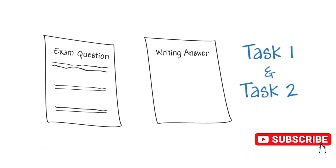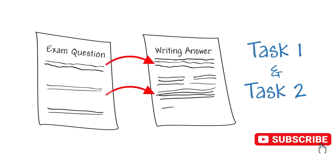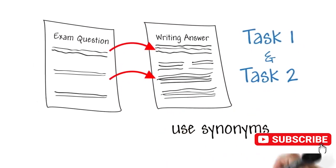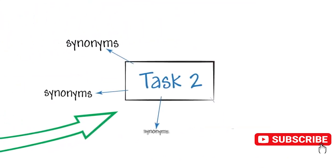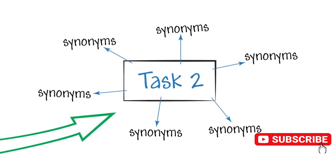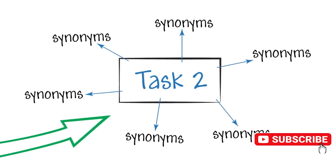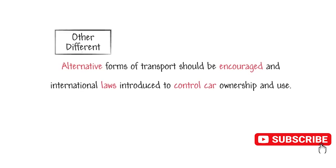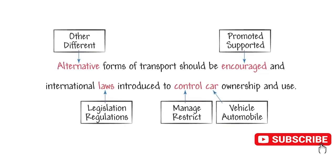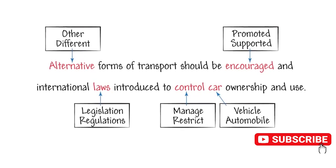For both task one and task two answers, try not to use too many words from the exam question in your response. Again, using synonyms can help here to reflect the same meaning. When analyzing your task two exam question, you can brainstorm synonyms for the keywords in the question and use these throughout your essay answer. For example: Alternative forms of transport should be encouraged and international laws introduced to control car ownership and use.